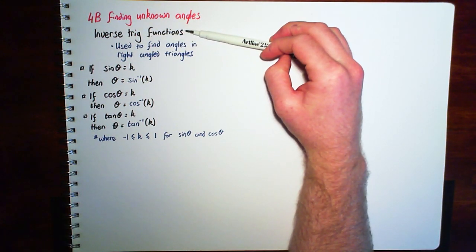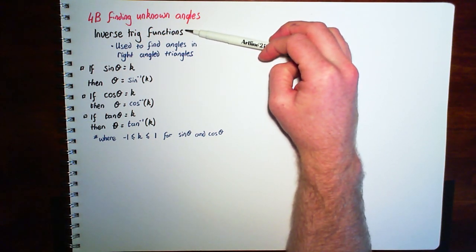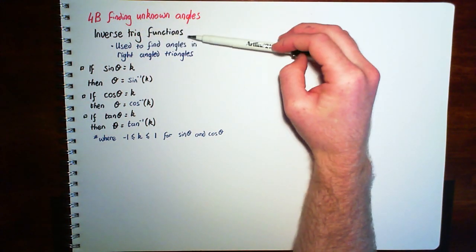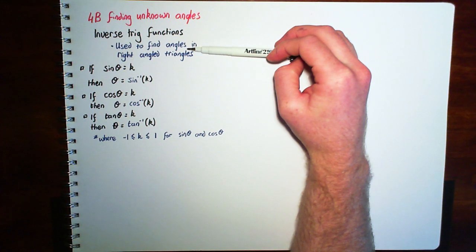So in the last section we talked about the ratios of sine, cosine, tan. This time we're using sine, cosine, tan but it's the inverse of those. And they're used to find angles inside the right angle triangles.